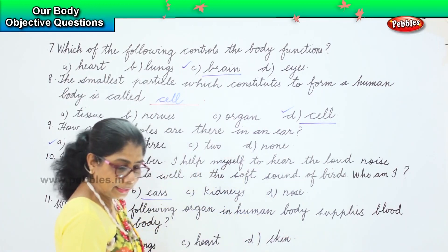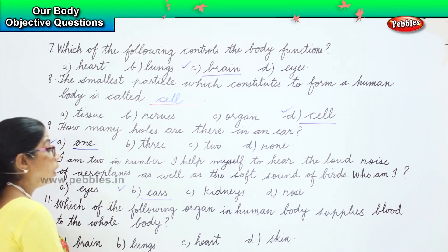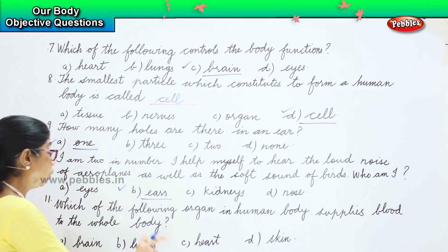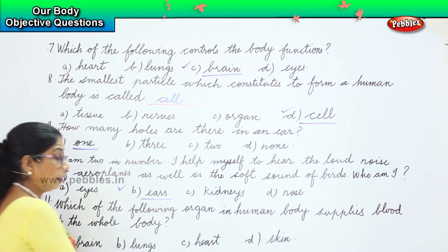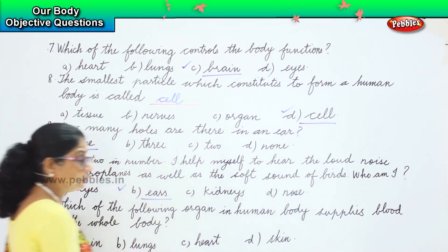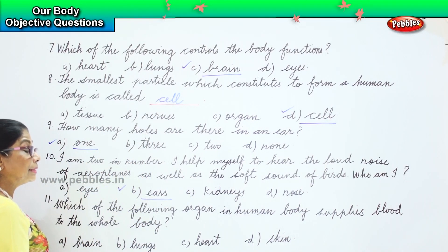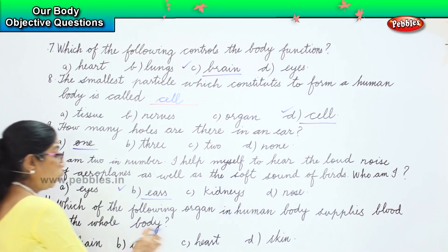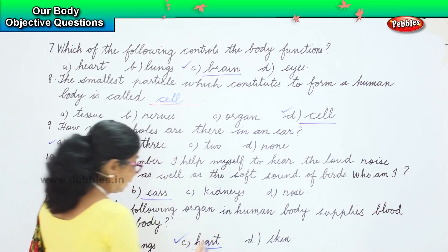Which of the following organ in the human body supplies blood to the whole body? Is it the brain supplying blood? No. Is it the lung? Is it the skin? The answer is it is the heart that supplies blood to the whole body. The answer is option C, heart.